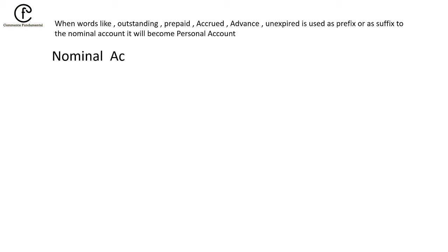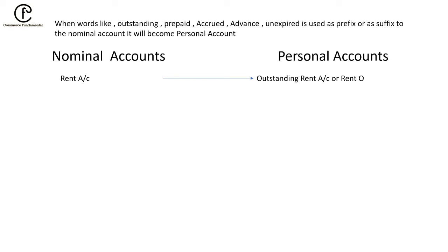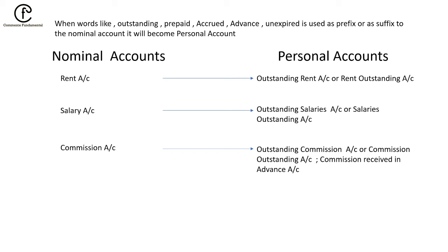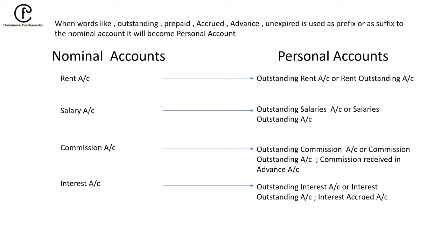For example: Rent is normally a nominal account, but 'outstanding rent' or 'rent outstanding' becomes a personal account. Similarly, salary is a nominal account, but 'outstanding salary' becomes a personal account. Commission outstanding, interest outstanding, interest accrued — all are personal accounts. Commission received in advance is also a personal account.